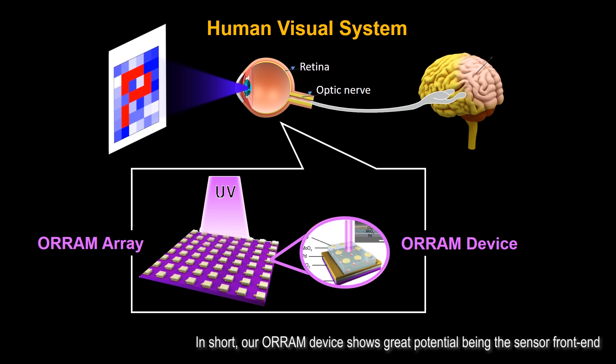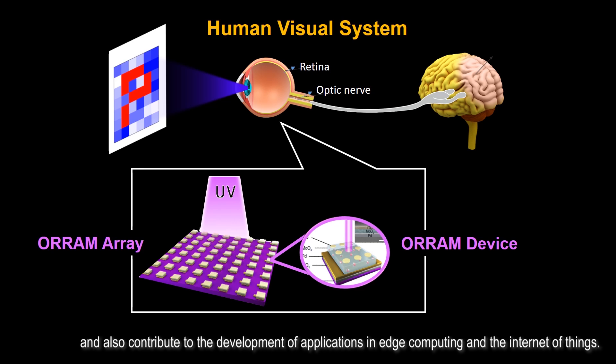In short, our ORRAM device shows great potential being the sensor front end, which can be used to simplify the circuitry of a neuromorphic visual system and also contribute to the development of applications in edge computing and the Internet of Things.